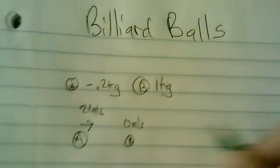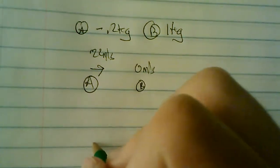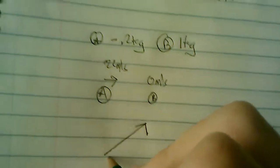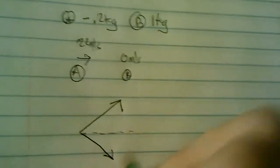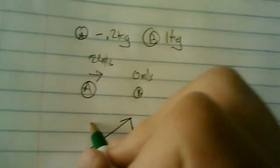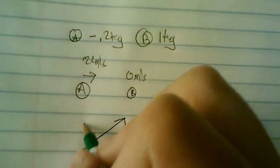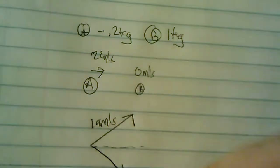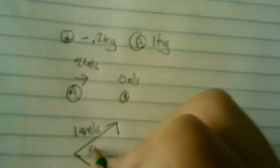So after the collision, A goes off this way, B goes off this way. And I'm giving that this is 19 meters per second, and that this here is 10 degrees.